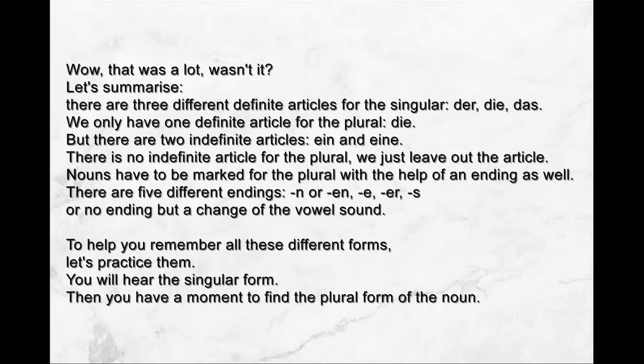That was a lot, wasn't it? Let's summarize. There are three different definite articles for the singular: 'der', 'die', 'das'. We only have one definite article for the plural: 'die'. But there are two indefinite articles: 'ein' and 'eine'. There is no indefinite article for the plural — we just leave out the article. Nouns have to be marked for the plural with an ending. There are five different endings: '-n' or '-en', '-e', '-er', '-s', or no ending but a change of the vowel sound.